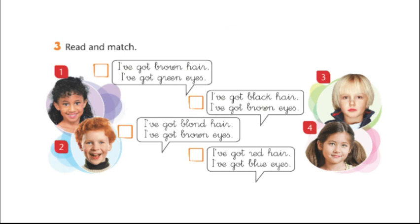Okay, now we have to read these sentences and match them with the correct picture of the child. So the first sentences I'm going to read. It says: I've got brown hair. I've got green eyes. Now I have to look for the picture of the child with brown hair and green eyes, and then write that number in the box.